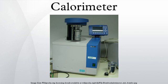A simple calorimeter just consists of a thermometer attached to a metal container full of water suspended above a combustion chamber. To find the enthalpy change per mole of a substance A in a reaction between two substances A and B, the substances are added to a calorimeter and the initial and final temperatures are noted. Multiplying the temperature change by the mass and specific heat capacities of the substances gives a value for the energy given off or absorbed during the reaction.